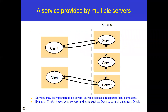A service can also be provided by multiple servers. In this model, clients get services from more than one server. The services may be implemented as several server processes in separate host computers. Examples include cluster-based web servers and applications such as Google, and parallel databases such as Oracle.